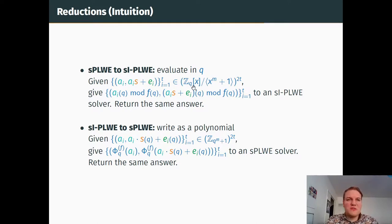To give you the intuition of the reductions, let us first take a look at how we go from polynomials to integers. We compute the evaluation in q for each sample and we give it to the SIPLWE solver. We get an answer that we hope is the right answer.